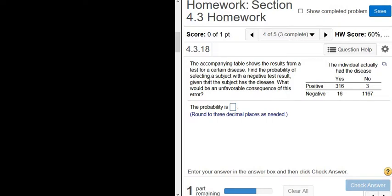So find the probability of selecting a negative test result given that the subject had the disease. Let's write that down. Probability of selecting a subject with a negative test result, so I'll just put neg, given that, so given that is the line, disease.